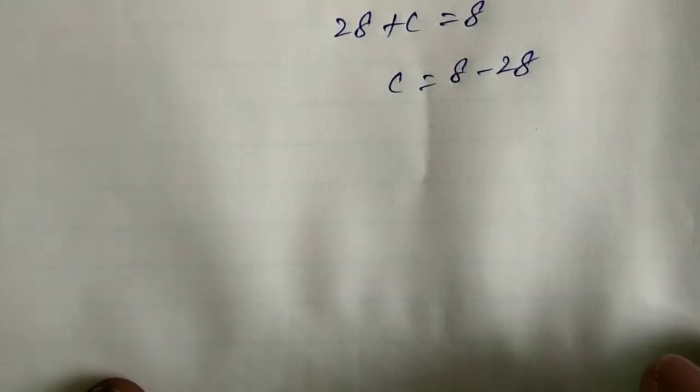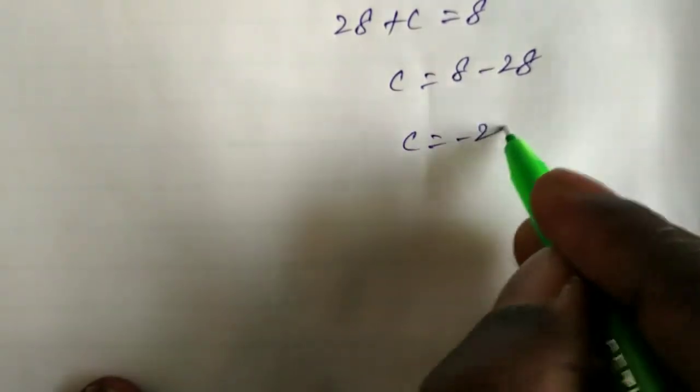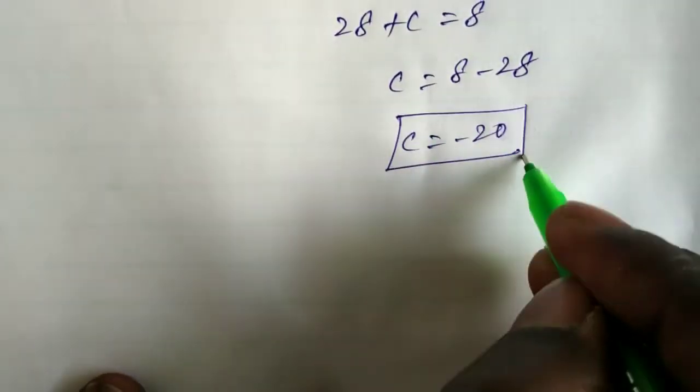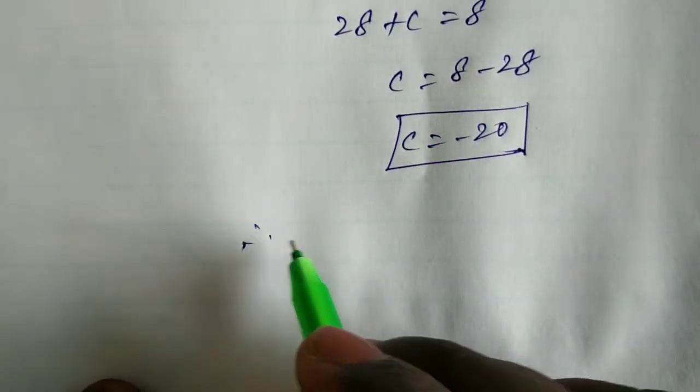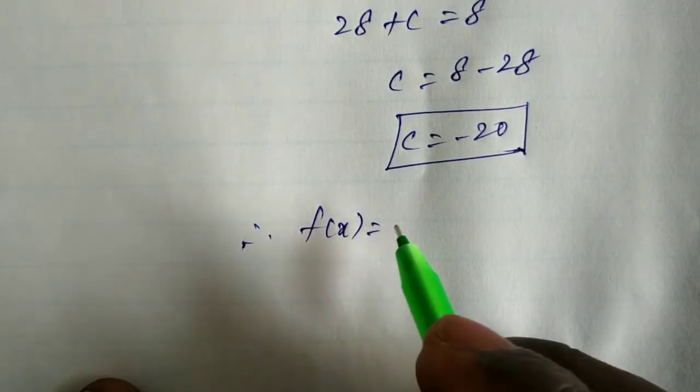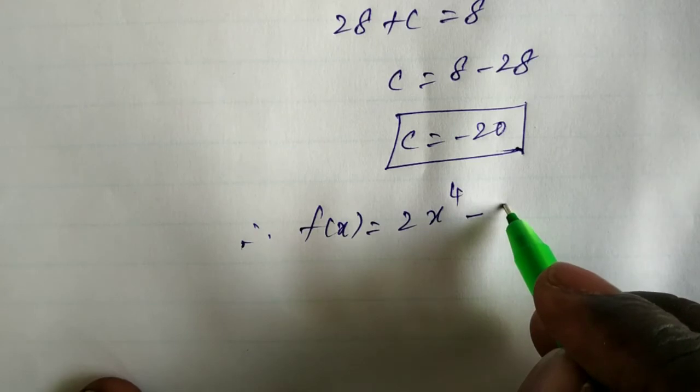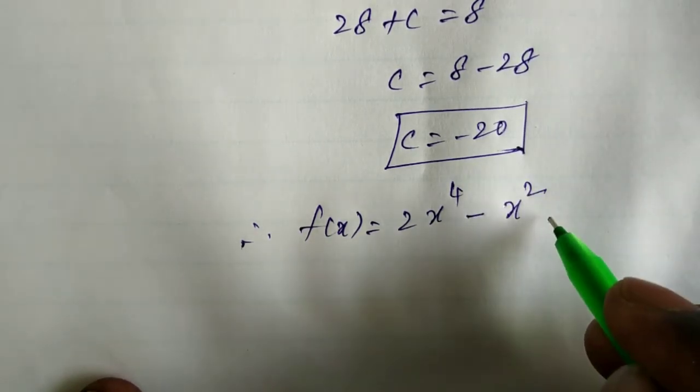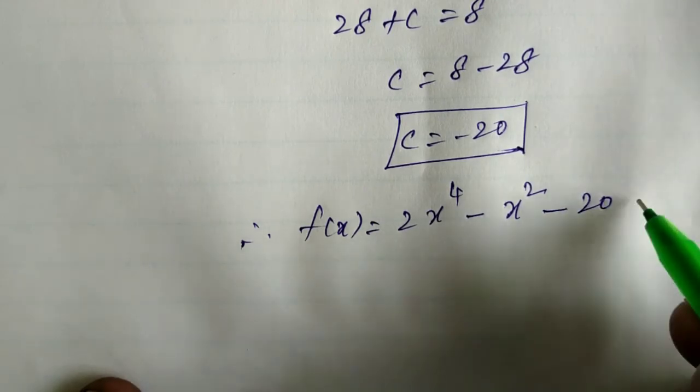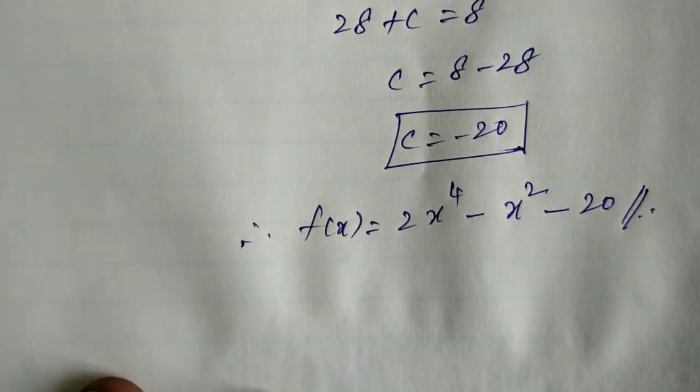The value of C is -20. Therefore, f(x) = 2x⁴ - x² - 20. That's all, thank you students.